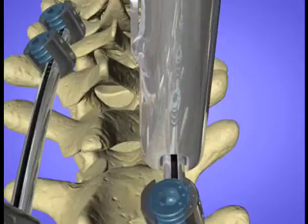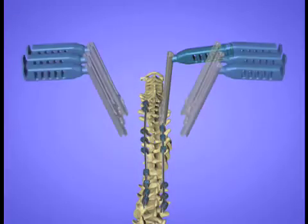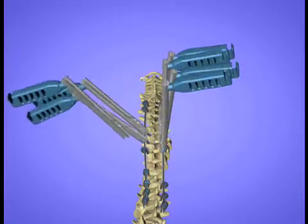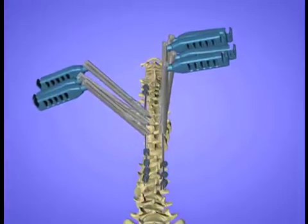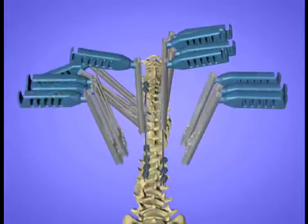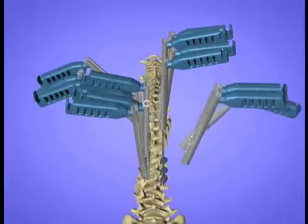Derotators are applied to the screws, starting with the right thoracic cluster. The plugs within the screws are not yet fully tightened, which facilitates the derotation.